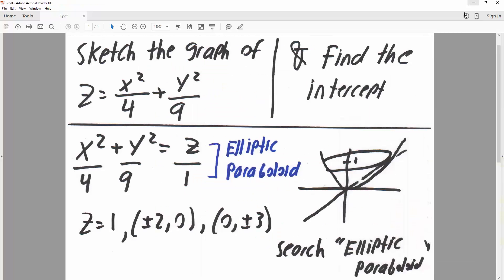So let's do it. We have x squared divided by 4 plus y squared divided by 9 equals z. We can say divided by 1 because c can be 1. So we will say z equals 1, square root would be plus or minus 2 for x. Likewise, y would be plus or minus 3. So we have plus or minus 2, 0 for x and 0, plus or minus 3 for y.